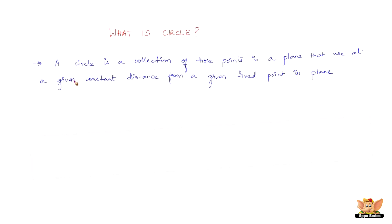The first one states that a circle is a collection of those points in a plane that are at a given constant distance from a given fixed point in the plane.